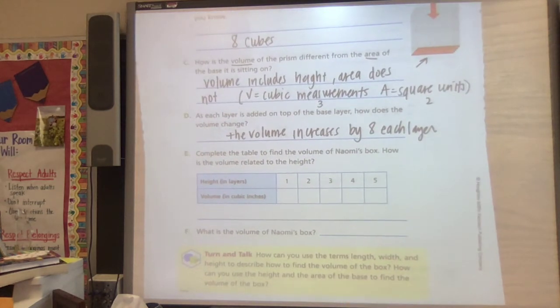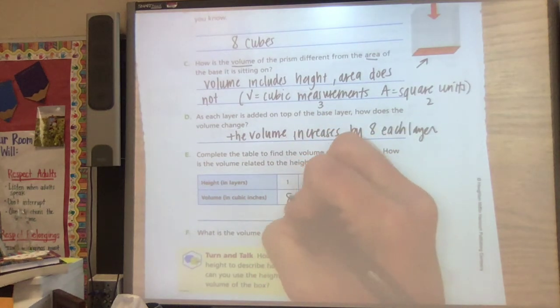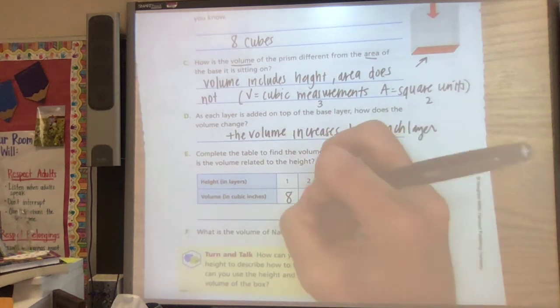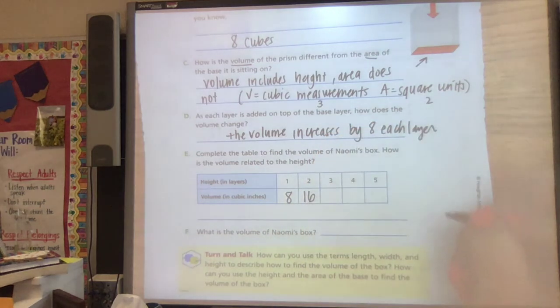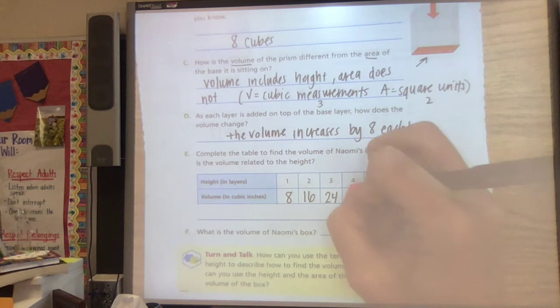So let's complete this table to find the volume of Naomi's box and how is volume related to height. So let's see if we can figure out that pattern. We know one layer is 8, we already worked that out, so that would mean two would have to be 16 since two groups of 8 is 16, three is 24, four is 32, and five is 40.